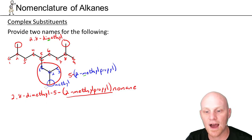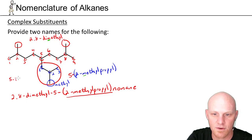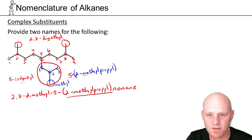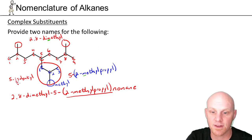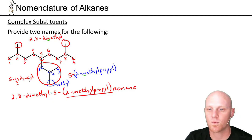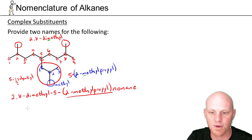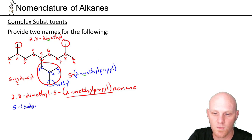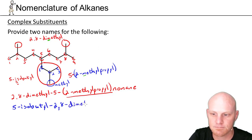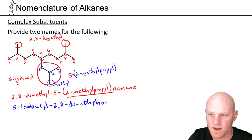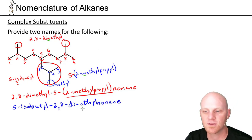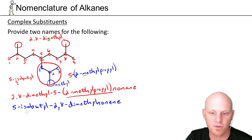You might also recognize this group as an isobutyl group. If we name it using the common name — which IUPAC also accepts — we'd have 5-isobutyl, alphabetized under 'I.' Since isobutyl comes earlier than methyl in the alphabet, we switch the ordering of our substituents. The name becomes 5-isobutyl-2,8-dimethylnonane. Both of these names are perfectly acceptable. One thing to keep in mind: when you name a complex substituent systematically, it goes in parentheses, but when you use one of the common names like isobutyl, it does not go in parentheses.